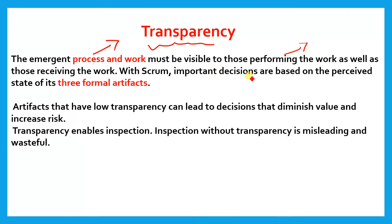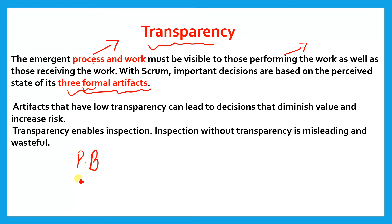With Scrum, important decisions are based on the perceived state of its three formal artifacts. What are the artifacts? We will discuss them later, but quickly: there are three formal artifacts. Whenever you see the word 'formal' it means we have to do it in Scrum. The first is the Product Backlog, the second is the Sprint Backlog, and the third is the Increment.